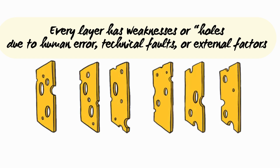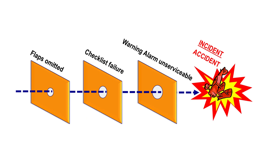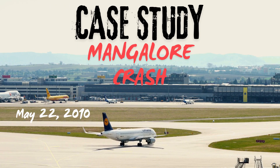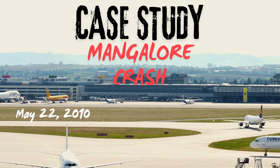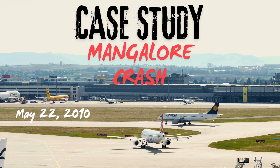When an accident happens, it's rarely because of a single failure. Instead, it occurs because multiple holes in different layers of defense align, allowing an error to slip through all the layers. The Swiss Cheese Model emphasizes that safety depends on the robustness of all defenses, and even small lapses across different barriers can result in catastrophic outcomes if they line up.